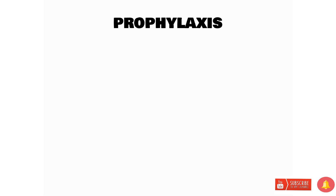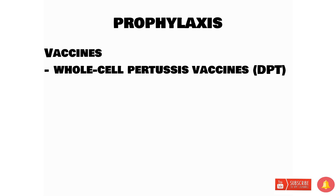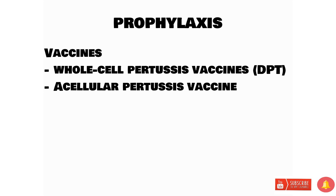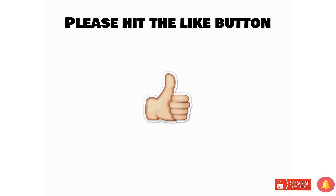For prophylaxis, vaccines are available against pertussis. The whole-cell pertussis vaccine is available in combination as the DPT vaccine — a combination of diphtheria, pertussis, and tetanus vaccines. There is also an acellular pertussis vaccine. The two main vaccines to remember are the whole-cell pertussis vaccine and the acellular pertussis vaccine, both available in combination with diphtheria and tetanus as the DPT vaccine.